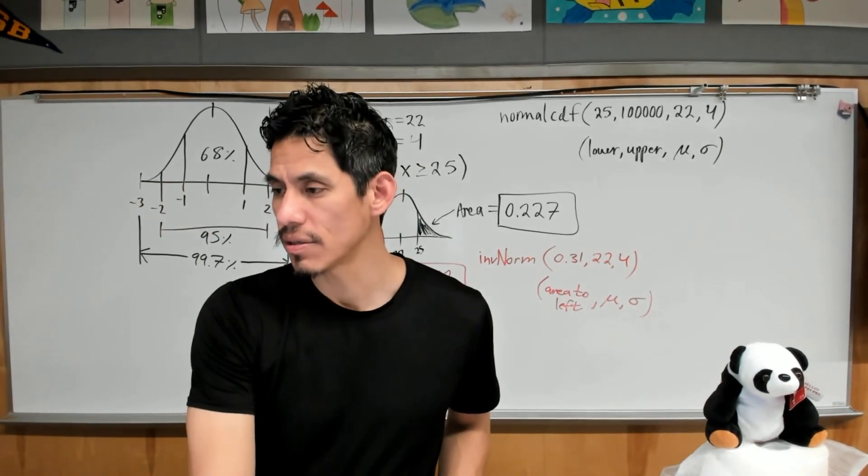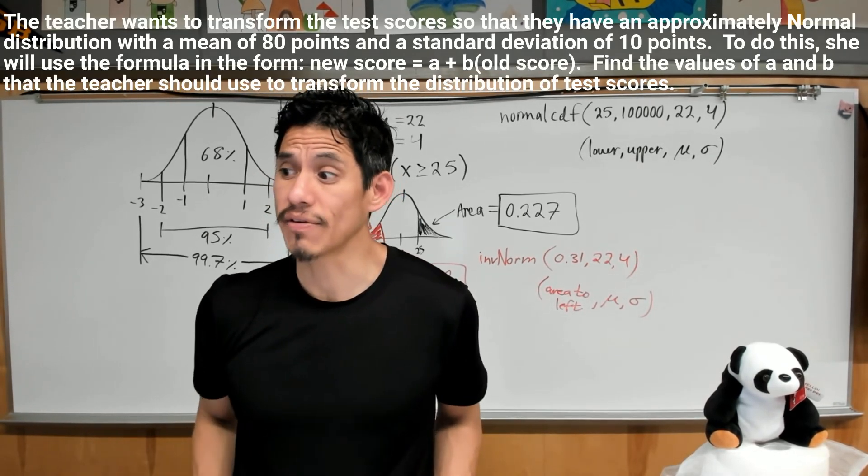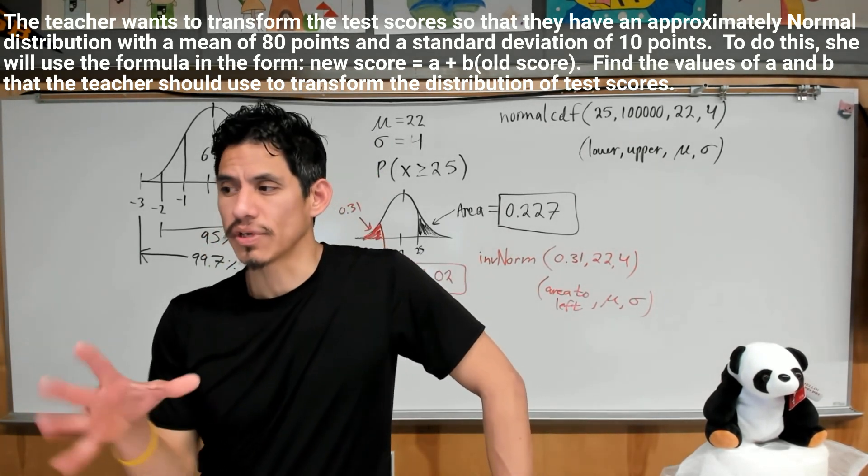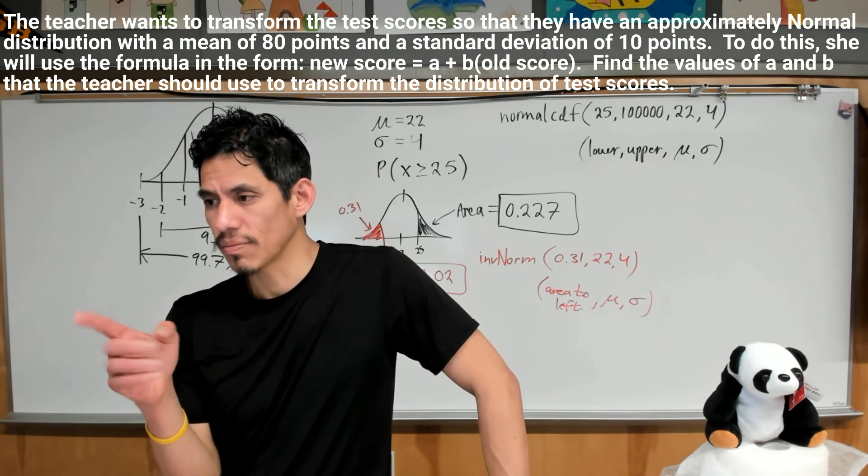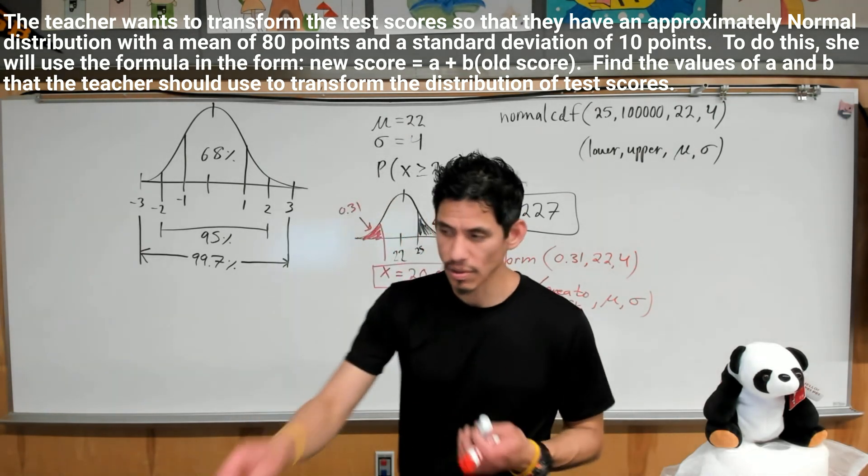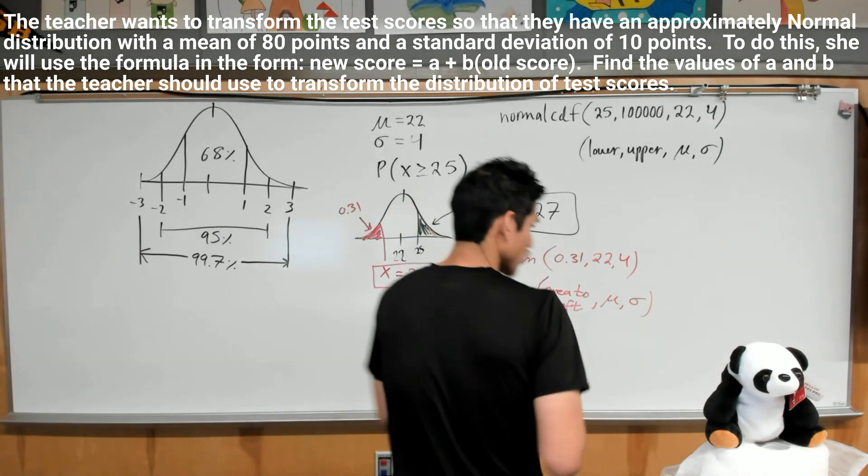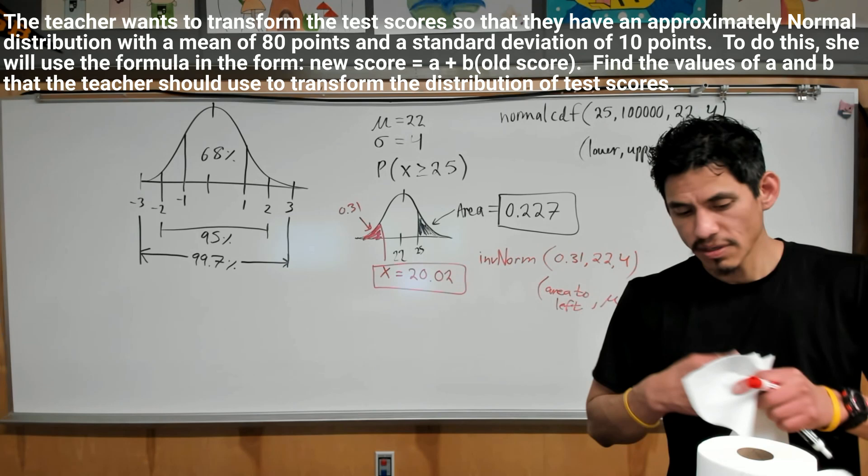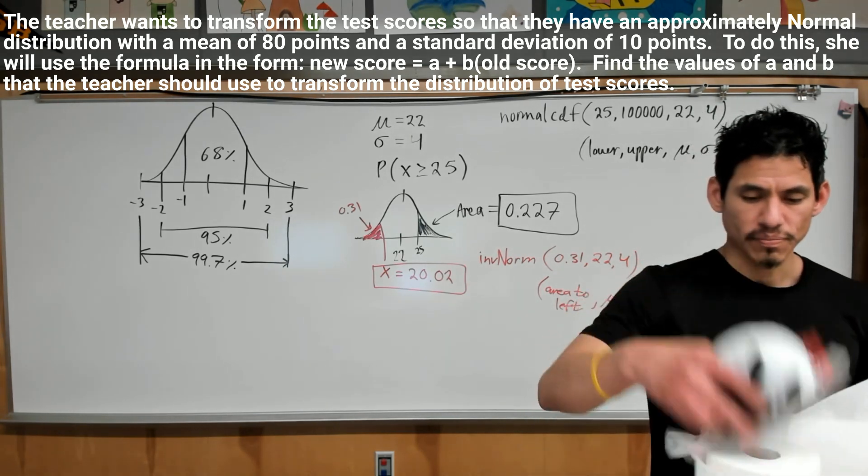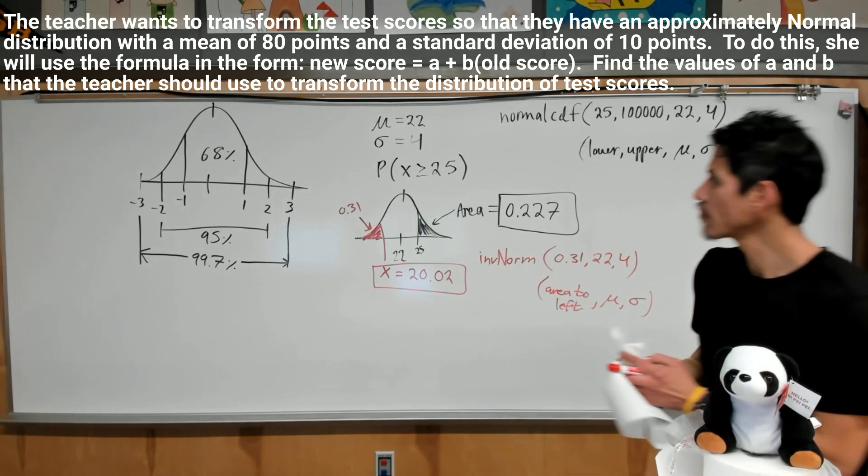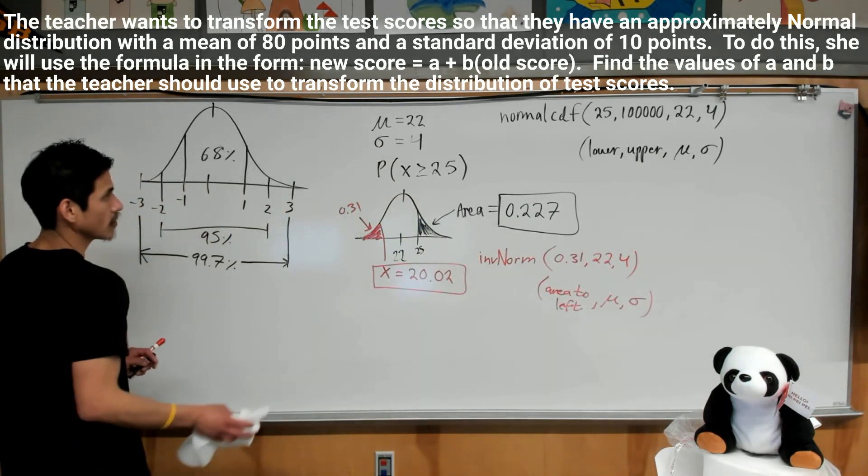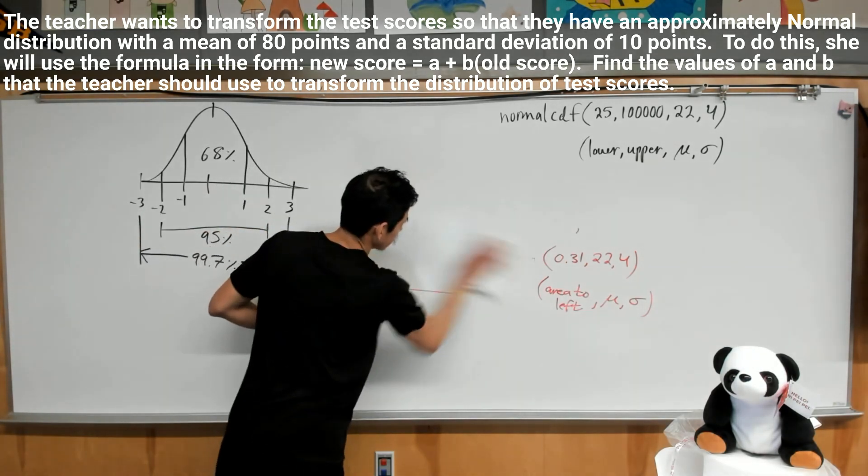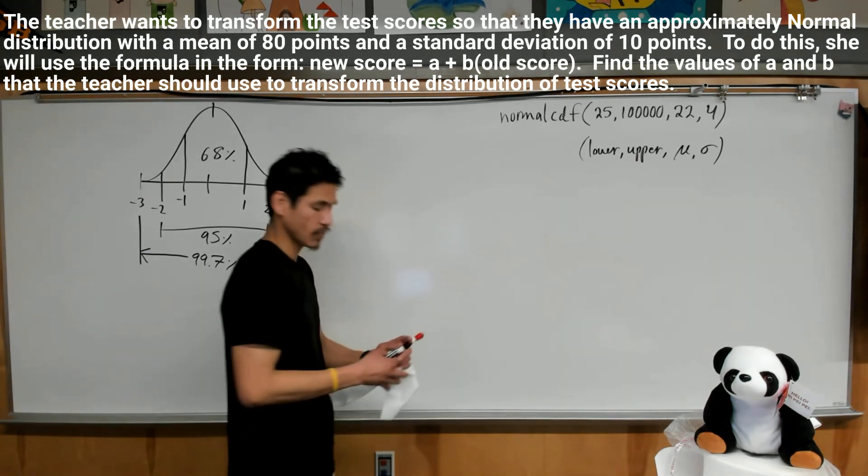Part C. The teacher wants to transform the test scores so that they have an approximately normal distribution with a mean of 80 points and a standard deviation of 10 points. To do this, she will use the form new score equals A plus B times the old score. Hold on, I'm going to have to excuse you for a minute. Okay, I'm going to erase something. Because I want to write clearly, I'll be quick.